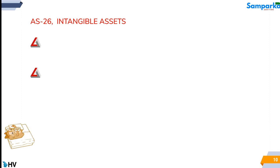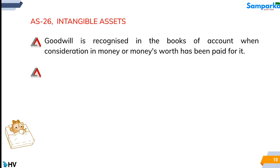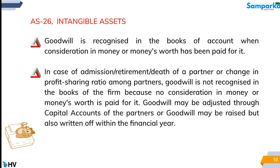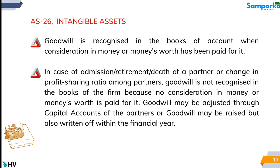Accounting Standard 26 — Intangible Assets: Goodwill is recognized in the books of account only when consideration in money or money's worth has been paid for it. In case of admission, retirement, or death of a partner, or change in profit sharing ratio among partners, goodwill is not recognized in the books of the firm because no consideration in money or money's worth is paid for it. Goodwill may be adjusted through capital accounts of the partners, or goodwill may be raised but also written off within the financial year.